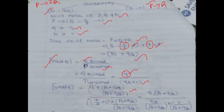Yield of Q equals Q formed divided by P consumed. Q formed is small q. P consumed is q/2 (from reaction 1) plus r (from reaction 2). To convert to mole fractions, multiply and divide both numerator and denominator by total moles (P₀ + q/2). The P₀ + q/2 terms cancel, leaving: yield of Q = [q/(P₀ + q/2)] divided by [q/2/(P₀ + q/2) + r/(P₀ + q/2)].